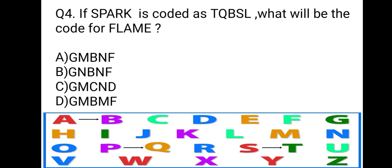R is coded as next letter S, and K is coded as next letter L. This means in this question SPARK's every letter is coded with the next letter. Then what will be the code for FLAME? Can we make the code for FLAME the same way? So, write down in your notebooks F, next letter is G, after L is M, A next is B, M next is N, E next is F.